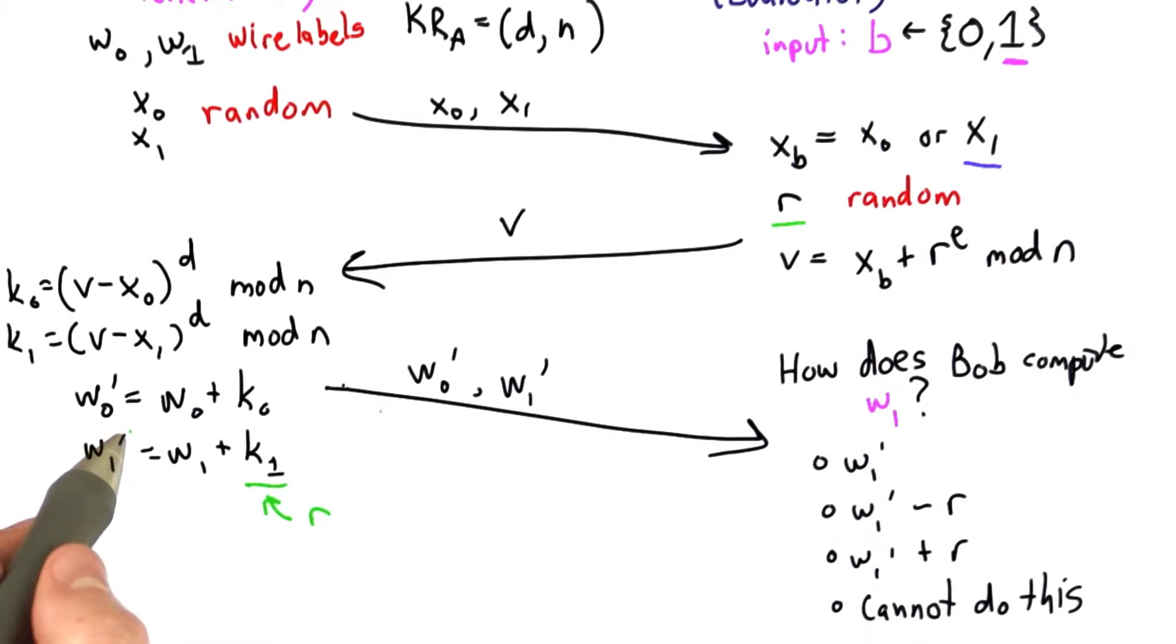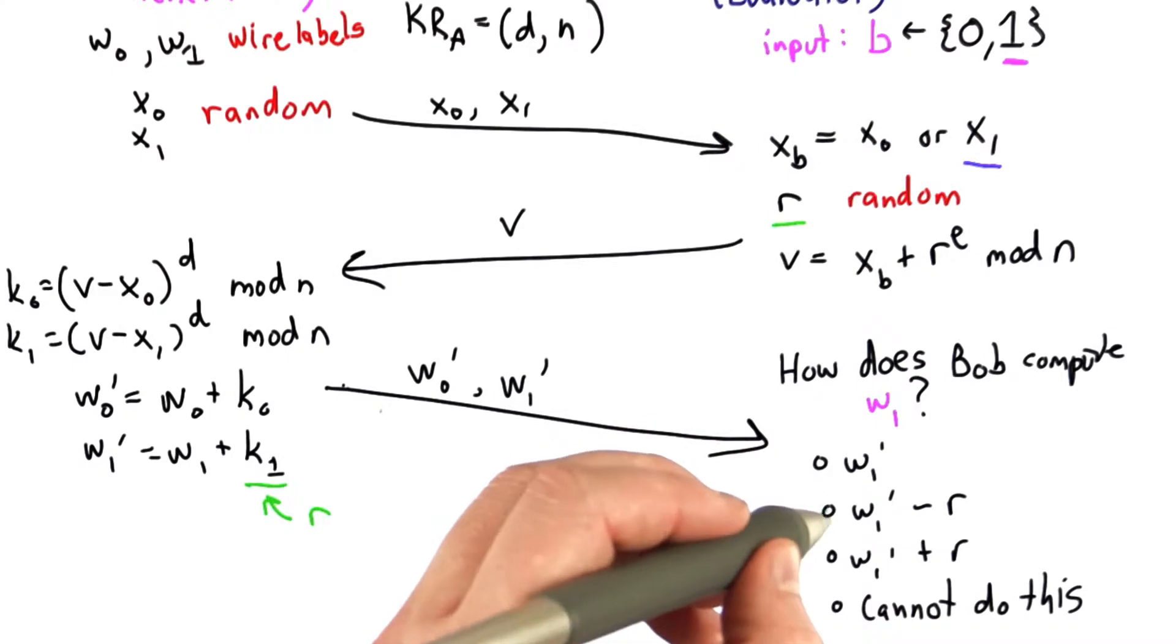So that means Bob can compute this. Subtracting r from w1 prime will give Bob the correct value of the wire label.